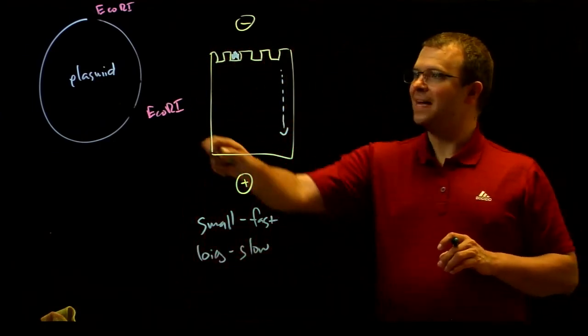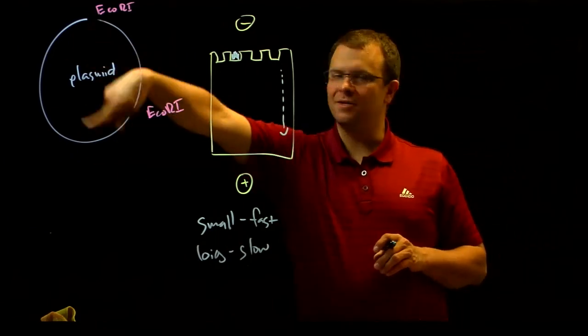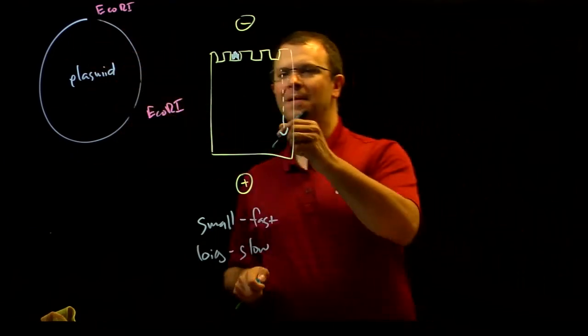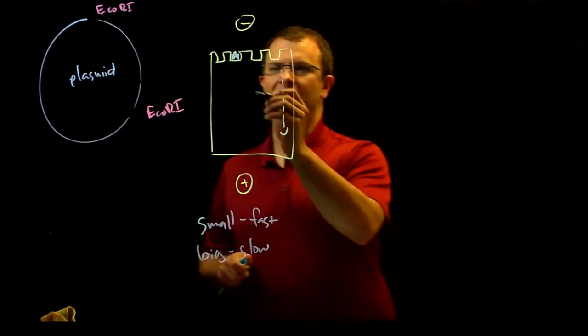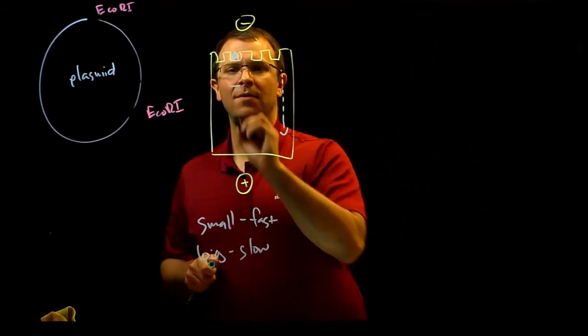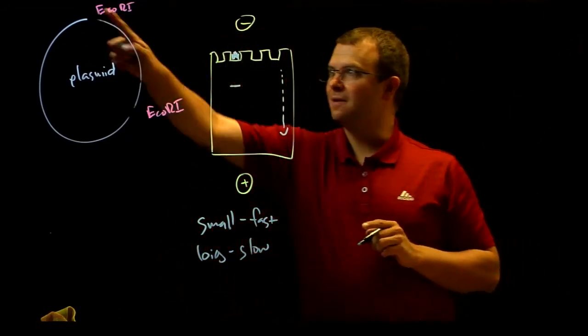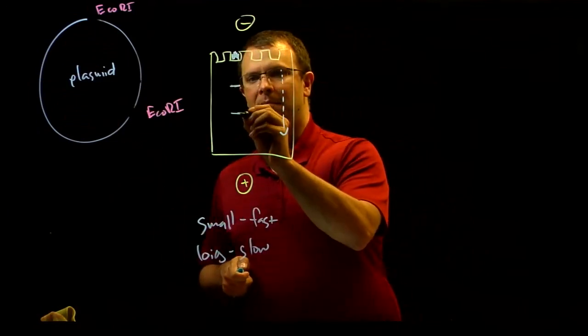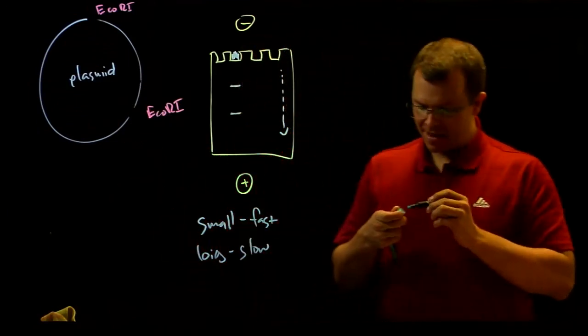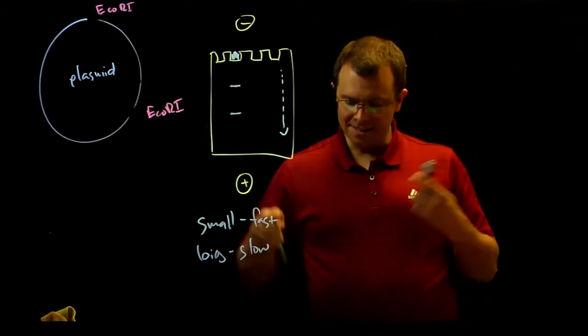So if I take my mixture of molecules after my cut and I separate them on the gel, I'll end up with one band on my gel representing the big molecule and another band representing the smaller fragment.